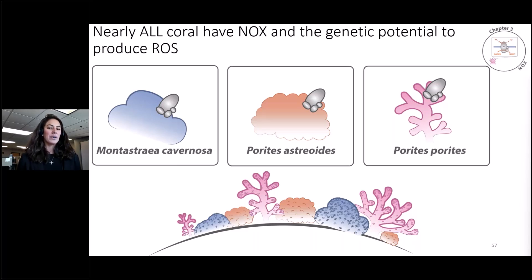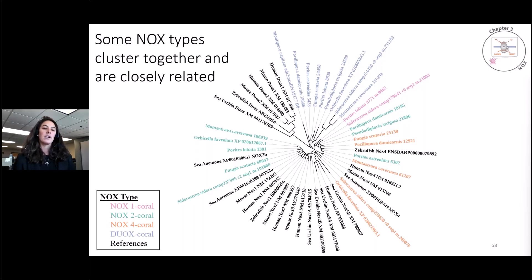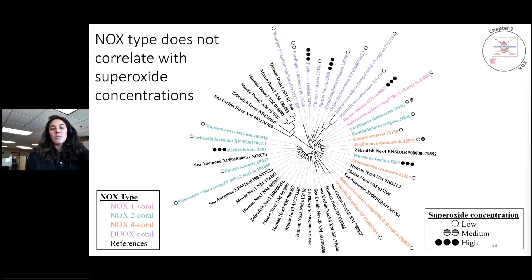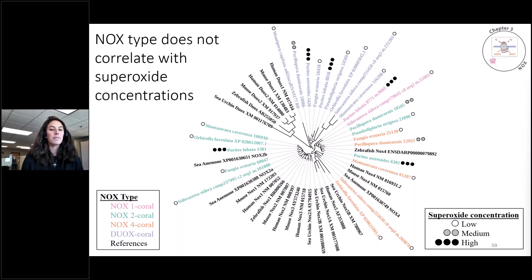But then, why do we still see different concentrations? Since there are different types of NOX, maybe it's the NOX type driving the superoxide variation. To look at that, we used a phylogenetic tree of the NOX sequences — black indicates references from other organisms, and the colors are different coral NOX-like sequences from different NOX types. When we overlaid superoxide concentrations on top of this — three dots for high superoxide, one dot for low — if the NOX type were driving concentrations, they would cluster together on the tree. We do not see that, suggesting the superoxide concentrations are not driven by the type of NOX the coral has.